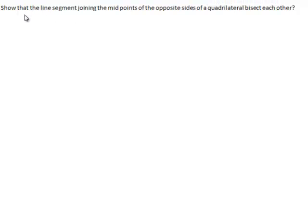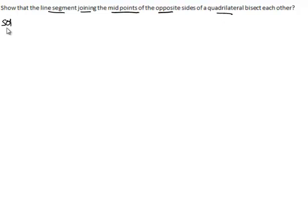Let's move to the next question. Here we have the problem. We have to show that the line segment joining the midpoints of opposite sides of a quadrilateral bisect each other. Let's work out the problem.